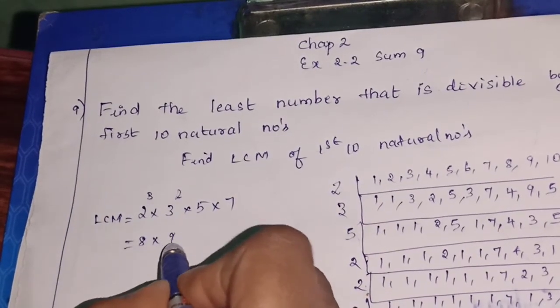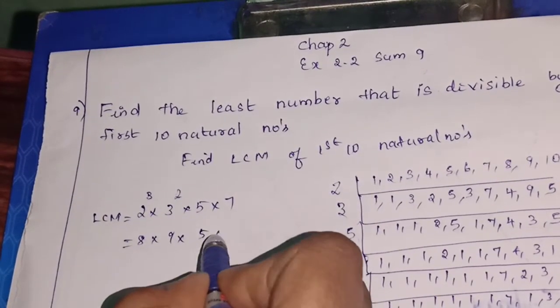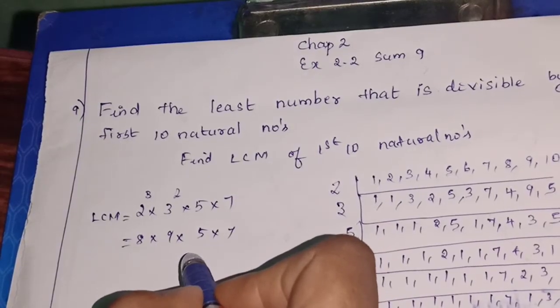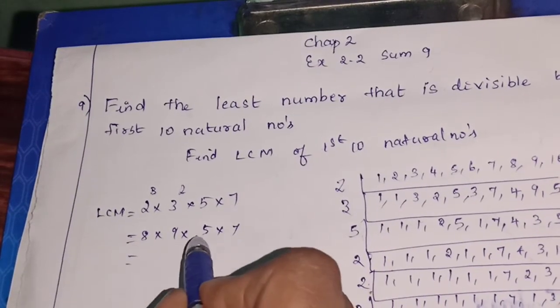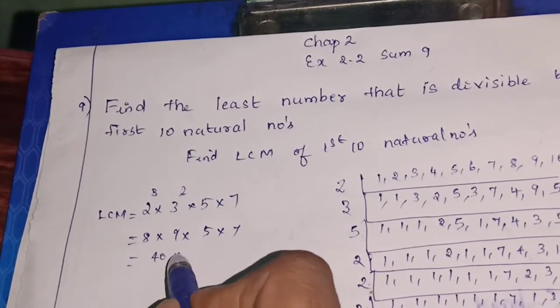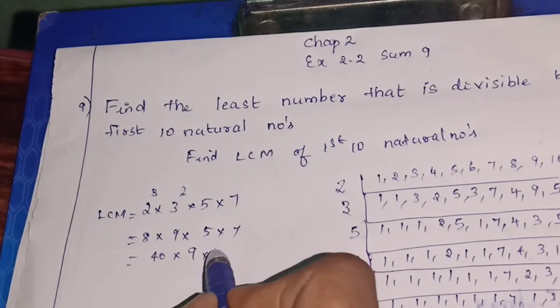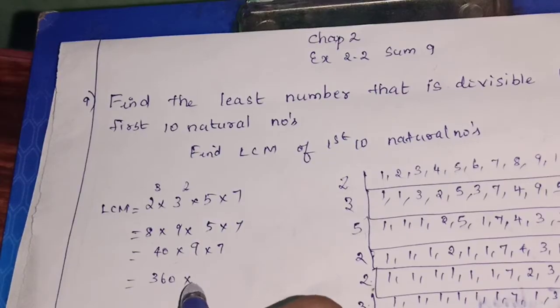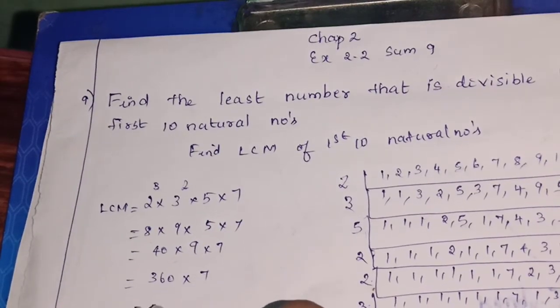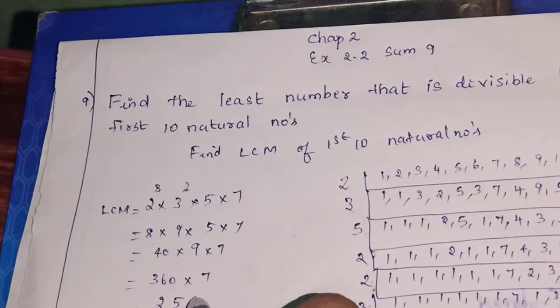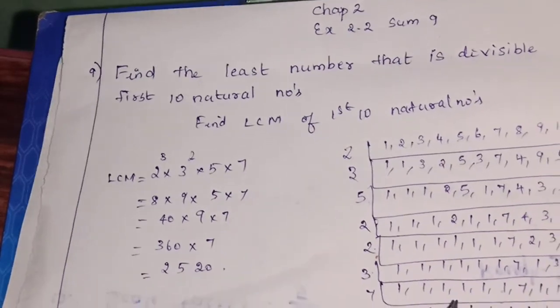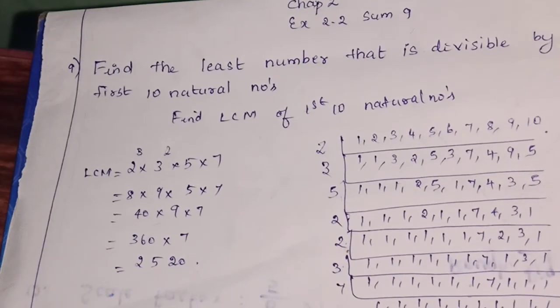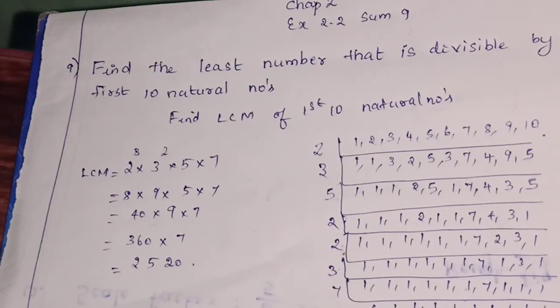So 8 into 9 into 5 into 7. So answer is 8, 5's are 40, 40 into 9 into 7, so 49's are 360 into 7. The answer is 2520.